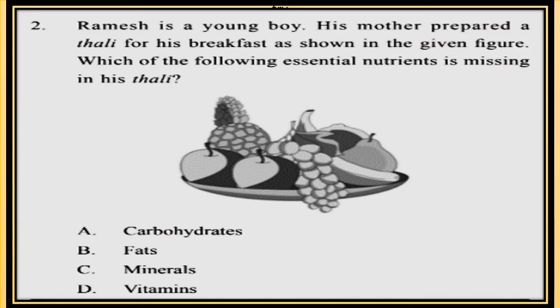Question 2. Ramesh is a young boy. His mother prepared a thali for his breakfast as shown in the given figure. Which of the following essential nutrients is missing in his thali? See the thali first. Options: A. Carbohydrates, B. Fats, C. Minerals, D. Vitamins.